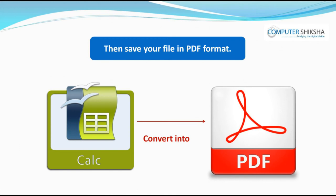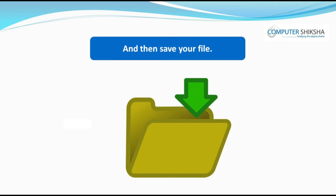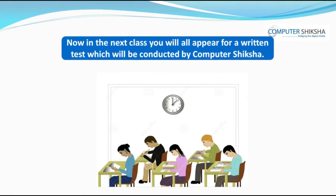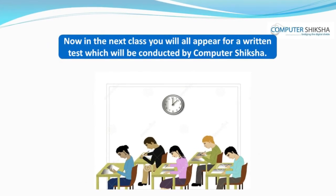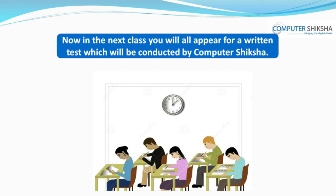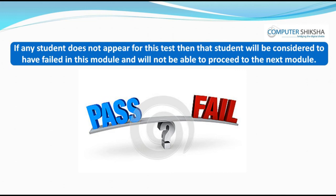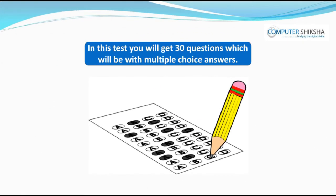Then save your file in PDF format and show it to your teacher. Now in the next class you will all appear for a written test which will be conducted by Computer Shiksha. If any student does not appear for this test, that student will be considered to have failed in this module and will not be able to proceed to the next module.